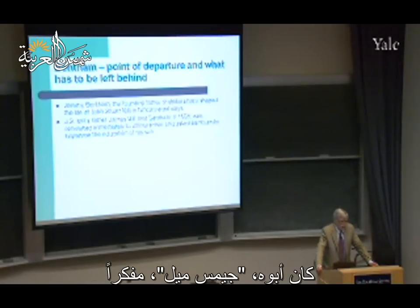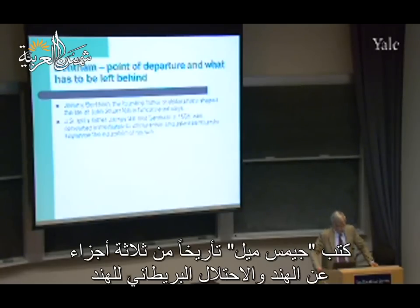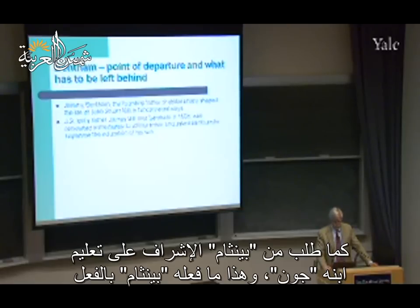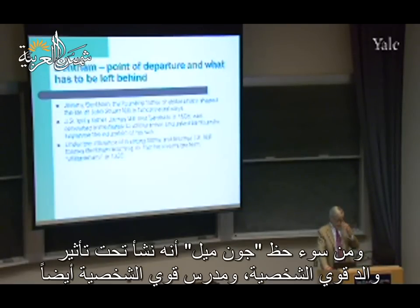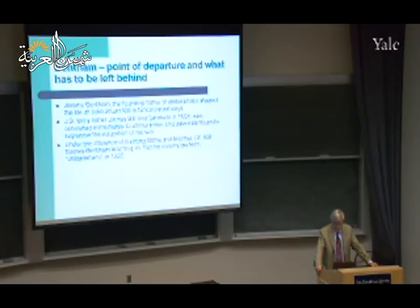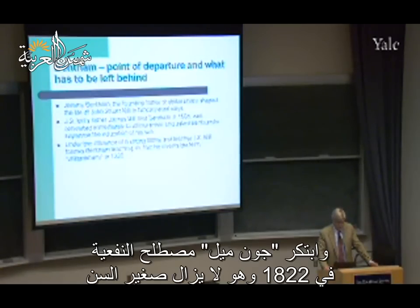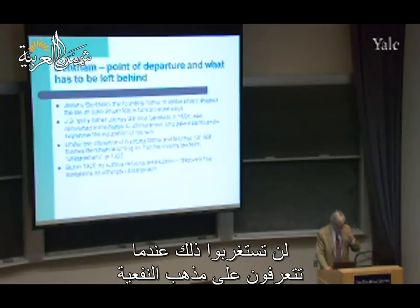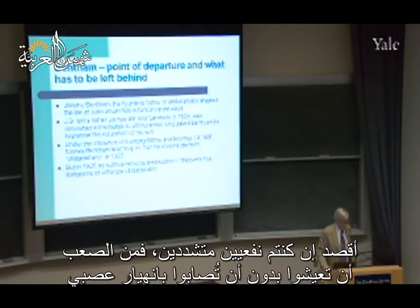Mill's father was James Mill, quite an intellectual who wrote a three-volume history of British involvement in India. He met Bentham in 1808, fell in love with the theory of utilitarianism, and asked Bentham to supervise the education of his son. So John Stuart Mill grew up under the influence of a very strong father and a very strong teacher. He invented the term 'utilitarianism' in 1822 at a very young age, then suffered a nervous breakdown - and when you see what utilitarianism is, you will not wonder.